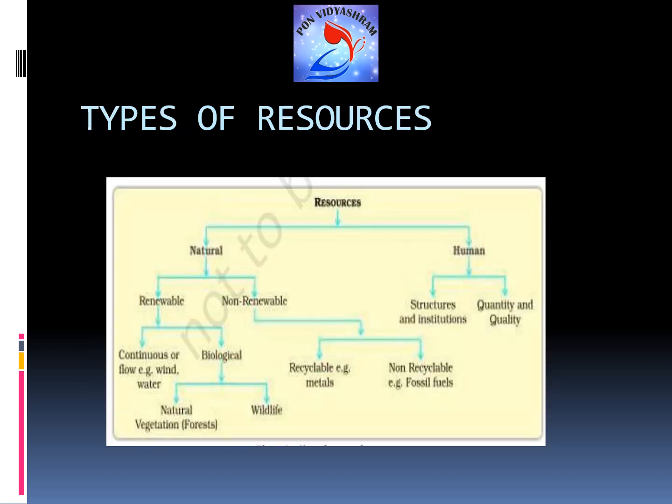Next we are going to see the types of resources. There are three types: natural, human-made, and human resources. Natural resources are anything readily available in our environment for consumption, for example forests. Human-made resources are natural resources converted into a more usable form — for example, land is a natural resource that is converted into buildings and apartments where people can readily access it.